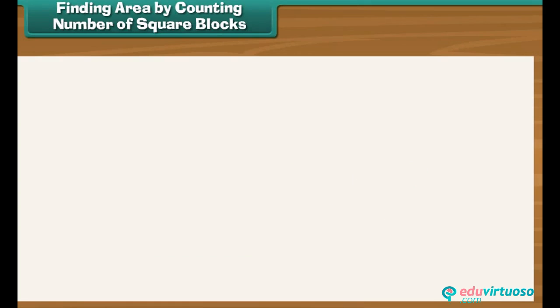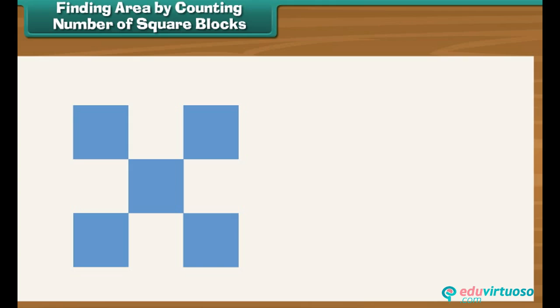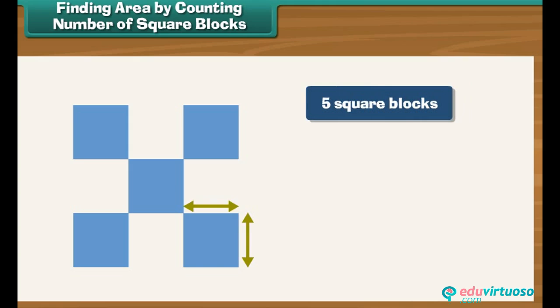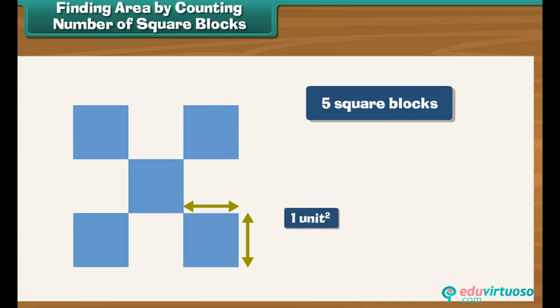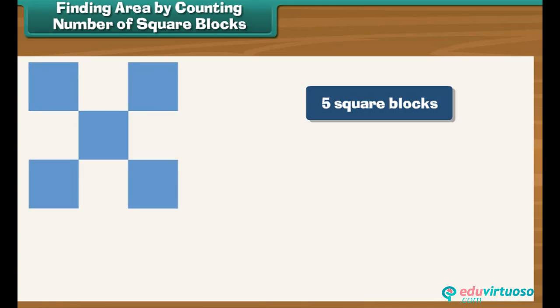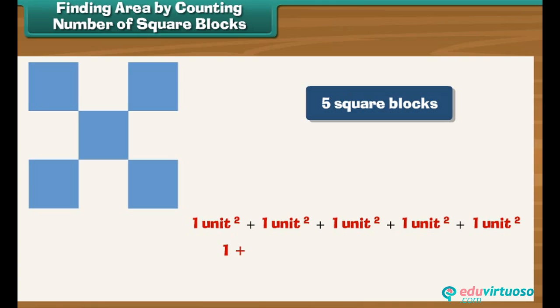Finding area by counting the number of square blocks. Let's calculate the area of a figure that contains five square blocks, where the length of each square block is one unit. The area of one square block of one unit length is one unit square. So the area of the complete figure is one plus one plus one plus one plus one, which equals five into one, which equals five unit square.